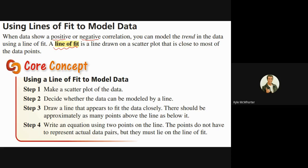Here are the steps. Step one: make a scatter plot of the data. Step two: decide if it is modeled by a line — see if it has a positive or a negative correlation. Step three: draw a line that appears to fit the data closely. This is not an exact thing yet; we're just eyeballing it, and you want to try to get about as many points above the line as below it.